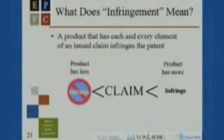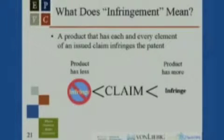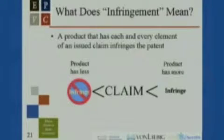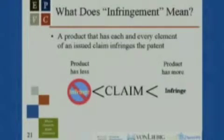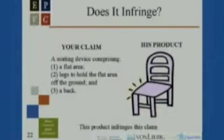So that begs the question as to what does infringement mean? In order for a product to infringe a patent, it has to infringe a claim. So if a product has each and every one of the elements of a claim, then it infringes that claim. If it is missing one of those elements, then it does not infringe. Or if one of the elements is different than the way the element is described in the claim, then it does not infringe. It can have more elements and still infringe, but if it has less, it does not infringe.